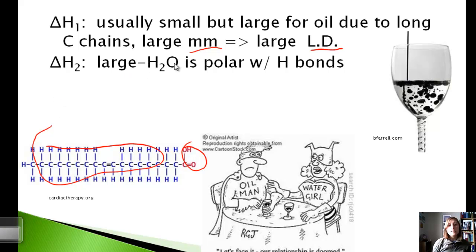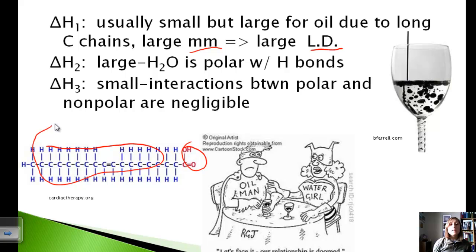Okay, the second part is to break apart the solvent. Well here we have to overcome hydrogen bonds because water is a polar molecule. So this is also going to be a very large value. Okay, then the third part is to put them together. Well, in this case, delta H is very small.